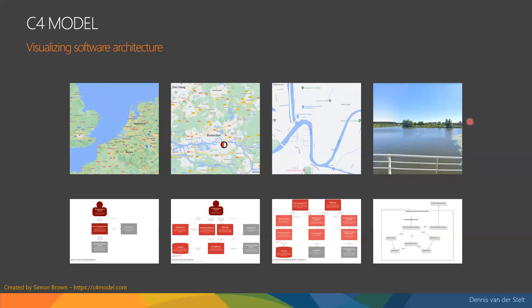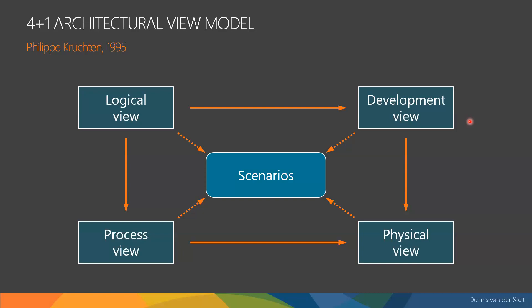No matter how many pictures you use, it's probably always wise to also include some text to describe what you can see. Another model, a little bit older from 1995, is from Philip Kruchten who was working at Rational, from the Rational Unified Process. He created a four-plus-one architectural view model, where in the middle you can see scenarios — basically all the functionality you want to build, such as use cases or in Scrum, Post-it notes. Then there are four ways to look at your architecture.